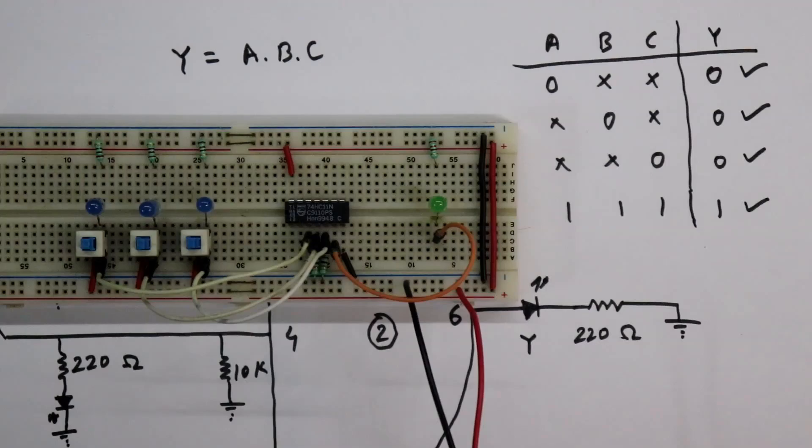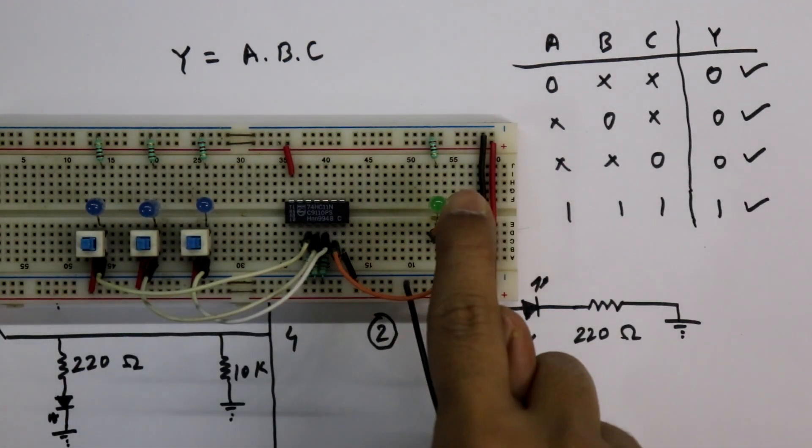Hello guys, in this video we are going to see IC7411, it is a 3-input AND gate. Here we have 3 inputs and this is the output.